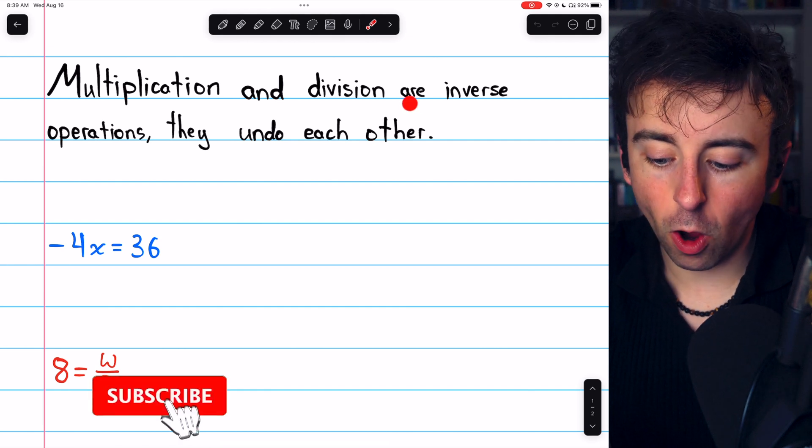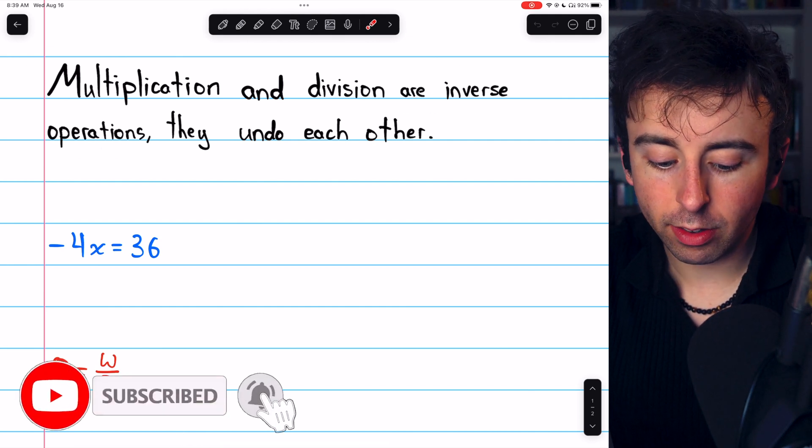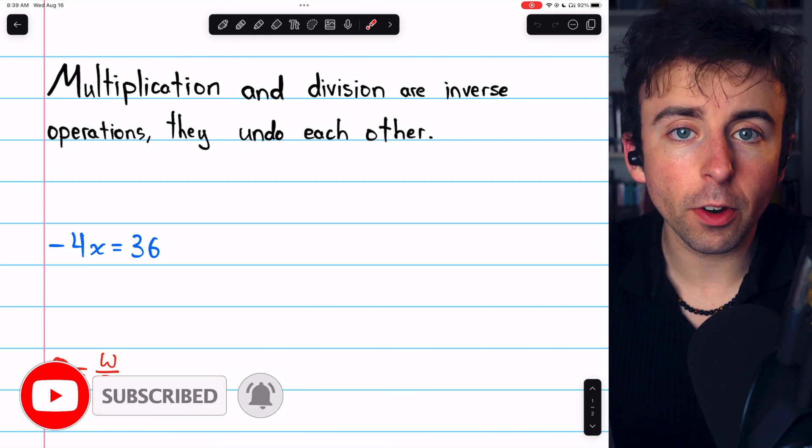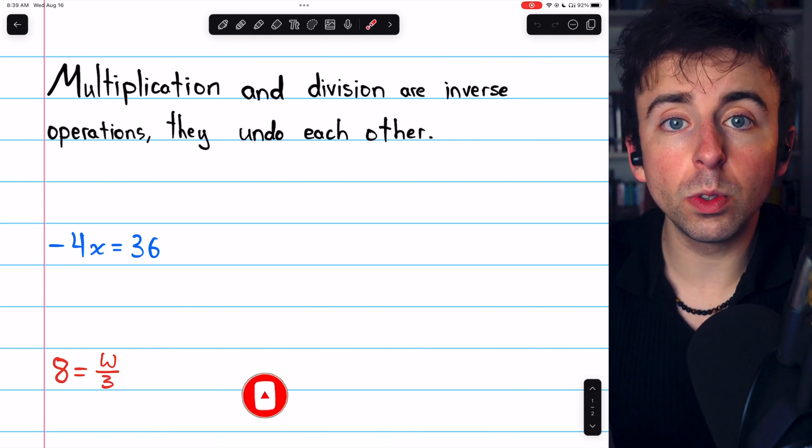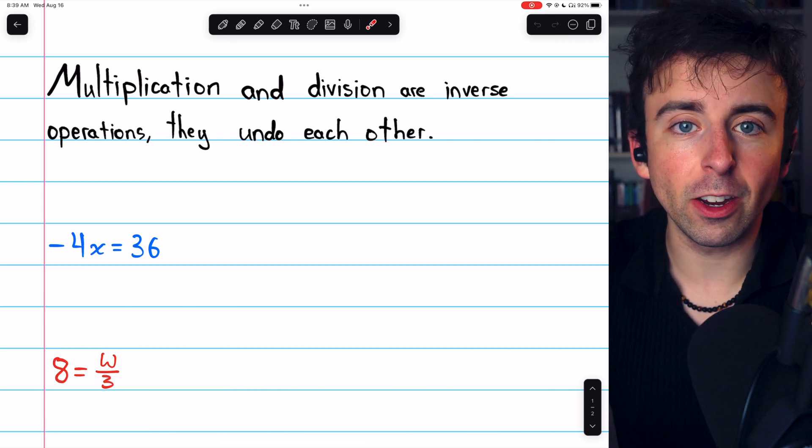Multiplication and division are inverse operations, which means they undo each other. So it's very easy to solve an equation using multiplication or division.